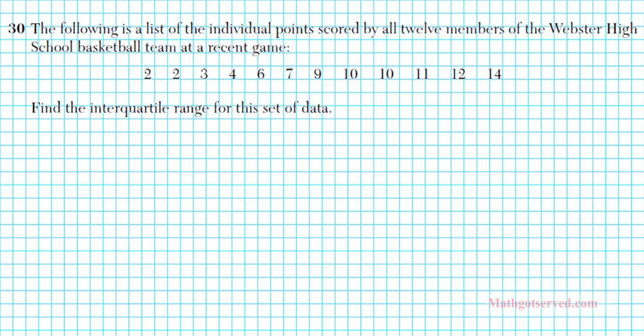It says the following is a list of individual points scored by all 12 members of the Webster High School basketball team at a recent game. We have 2, 2, 3, 4, 6, 7, 9, 10, 10, 11, 12, 14. Let's find the interquartile range for this set of data.